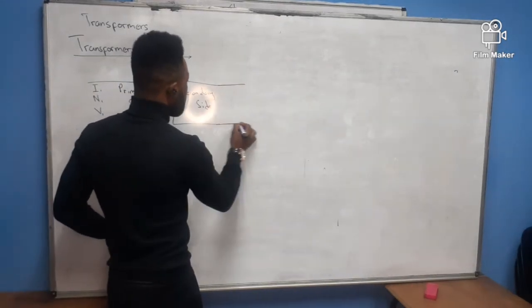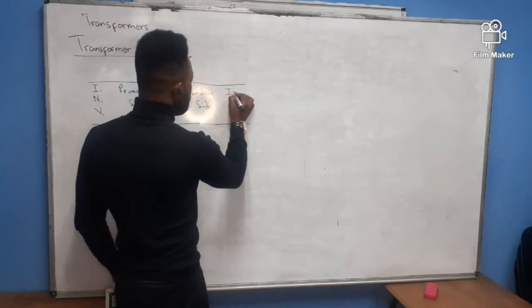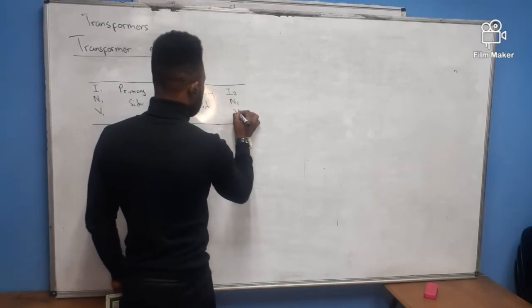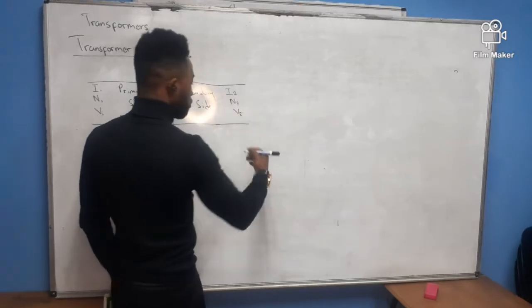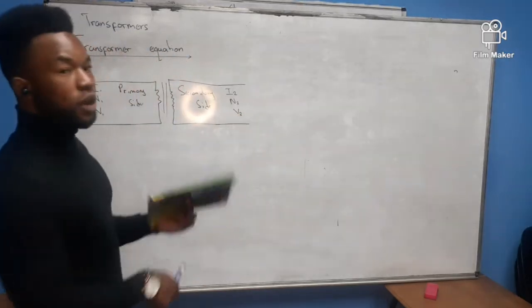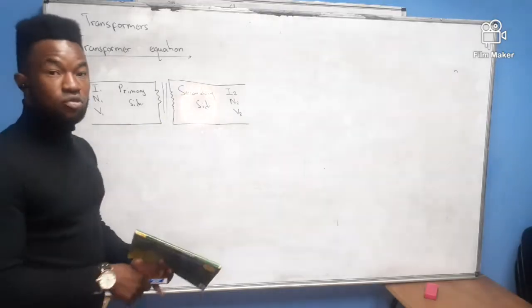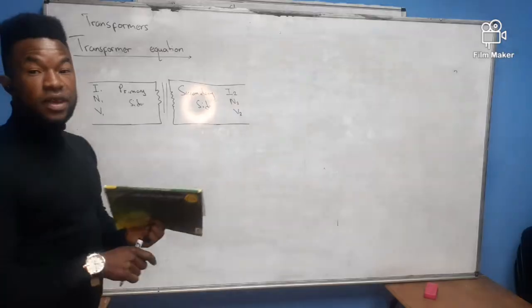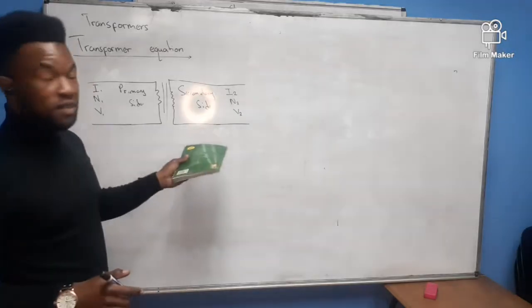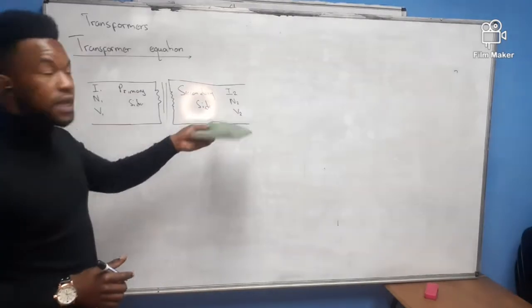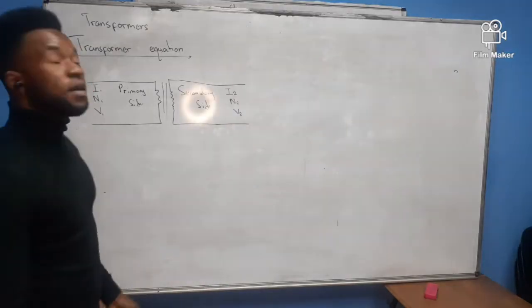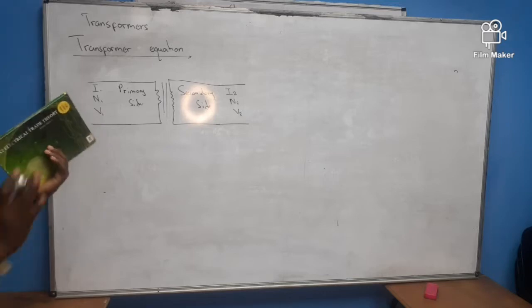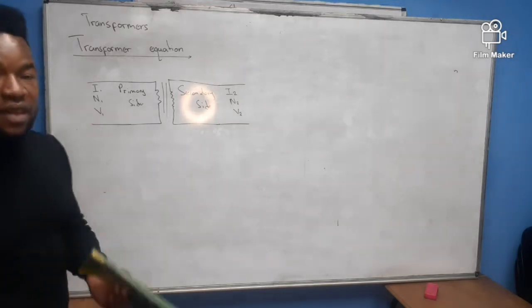On the secondary side of the transformer you find I2, N2, and V2. You have two sides: the primary side and the secondary side. On the secondary side you find the secondary current, the secondary number of turns, and the secondary voltage.